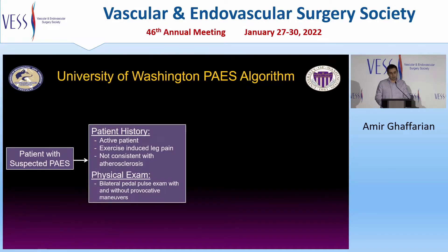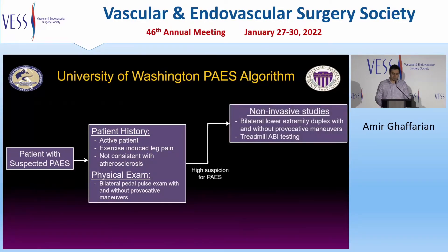Our algorithm begins with a careful patient history to confirm that the patient is active, has exercise-induced leg pain consistent with claudication that is not due to atherosclerosis. We then perform a physical exam to assess bilateral maneuvers. If there's high suspicion for popliteal entrapment, we offer the patient a bilateral lower extremity duplex with and without provocative maneuvers, as well as treadmill ABI testing.